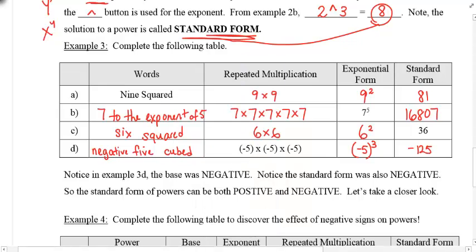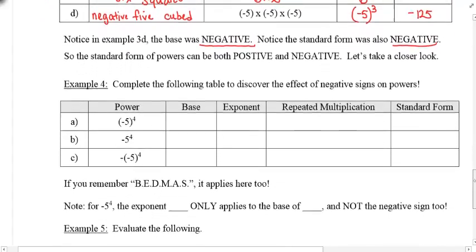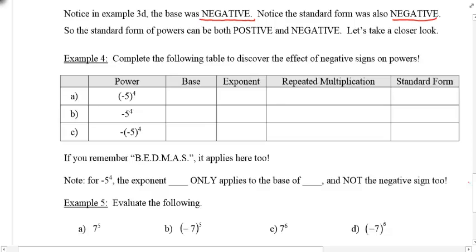Notice that in example 3D the base was negative, and the standard form was also negative. Standard form numbers can be positive like the first three examples, or negative like the last one. To understand this better, let's do example four, which shows the effects of a negative sign and how it can change your answer with powers. I've given you the exponential form and I want you to identify the base, the exponent, write the repeated multiplication, and then give me the standard form.